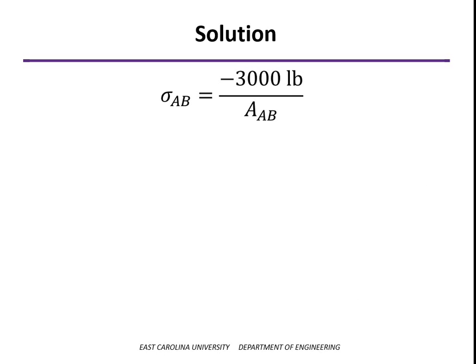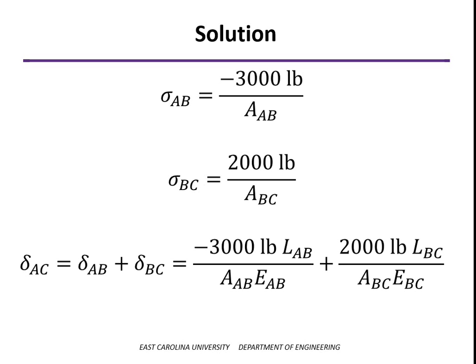To find the stress in segment AB, I take PAB — which is minus 3,000 pounds — and divide by the cross-sectional area. Similarly for BC, I take 2,000 pounds and divide by the cross-sectional area of BC. To find the total change in length, I add the change in length of AB, which is PL over AE, and do the same for BC. If there's a temperature change, I'd add that term as well. Segment AB is in compression with a negative change in length — it shortens — whereas segment BC is in tension and gets longer.